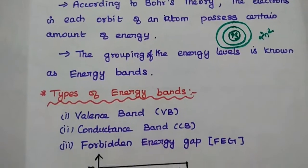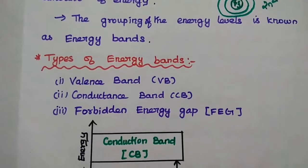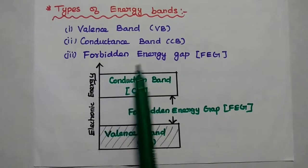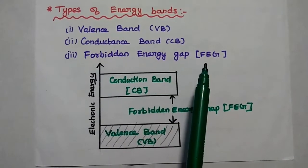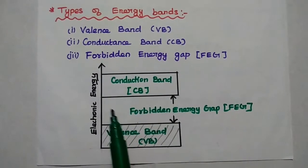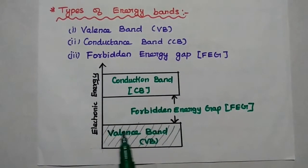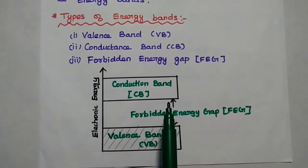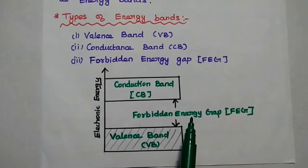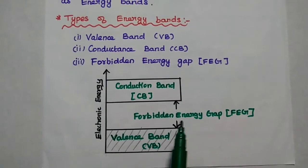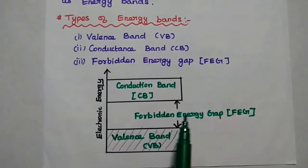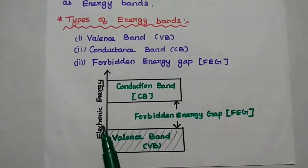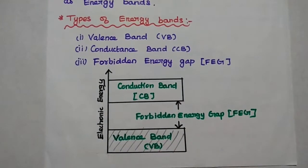The grouping of those energy levels is known as energy bands. There are different types of energy bands available: valence band, conduction band, and forbidden energy gap. This is the energy band structure. This is the valence band, this one is the conduction band, and in between we have the energy gap, that is denoted as forbidden energy gap, FEG, with respect to the electronic energy in the orbit.